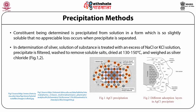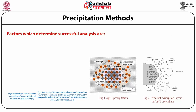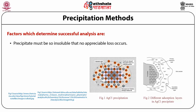The precipitate is well washed to remove soluble salts, dried at 130 to 150 degrees centigrade, and weighed as silver chloride. The following factors determine a successful analysis by precipitation. First, the precipitate must be so insoluble that no appreciable loss occurs when collected by filtration — in practice, the quantity remaining in solution should not exceed 0.1 mg, the minimum detectable by an ordinary analytical balance.